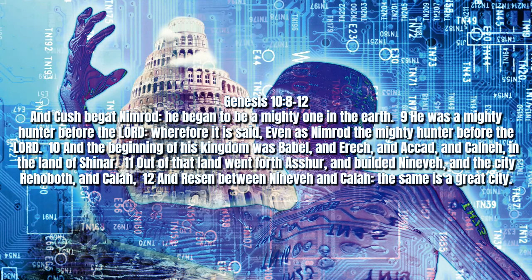Verses 15 to 19 describe the various Canaanite tribes who inhabited the land from the Mediterranean to the east of the Jordan River. Then we read in verse 20: These are the sons of Ham after their families, after their tongues, in their countries and in their nations. Verse 21: Unto Shem also, the father of all the children of Eber, the brother of Japheth the elder, even to him were children born. Eber is given special mention because it was from Eber that the Hebrew language is named, and through whom the lineage of the promised Messiah is continued — going from Shem to Arphaxad in verse 22, to Selah, then to Eber in verse 24, then to Peleg in verse 25.